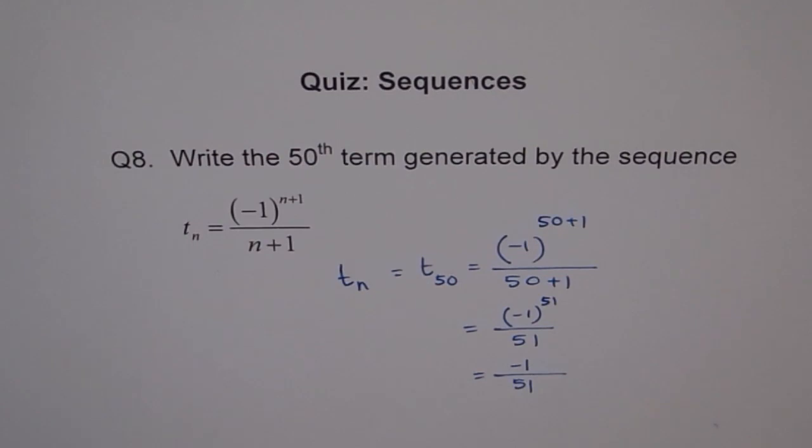So our 50th term is minus 1 over 51. We should write this as minus 1 over 51 as our 50th term. Thank you.